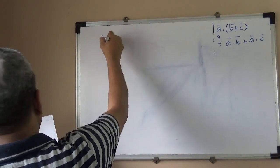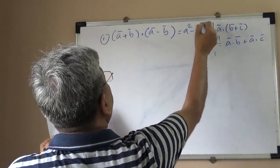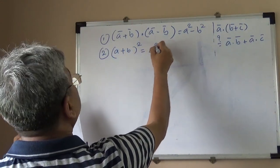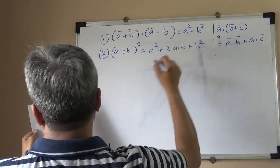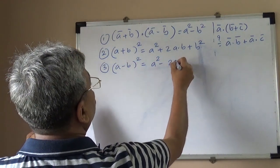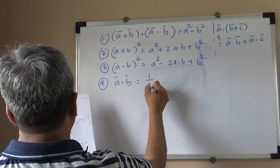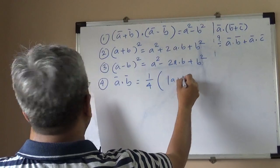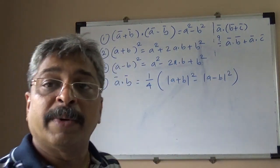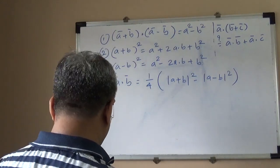Make sure these four identities are also proved. One: (A + B)·(A − B) = |A|² − |B|². Two: |A + B|² = |A|² + 2(A·B) + |B|². Three: |A − B|² = |A|² − 2(A·B) + |B|². Four: A·B = ¼(|A + B|² − |A − B|²). These are identities to remember, and you can prove them quickly using the definition of scalar product.